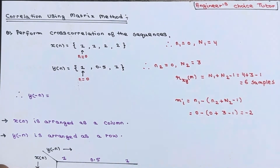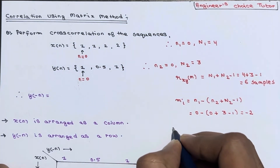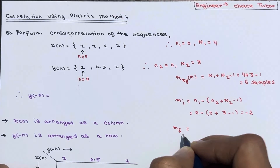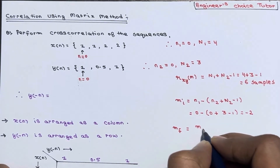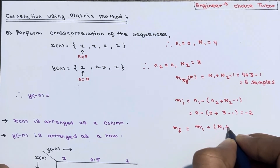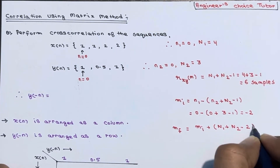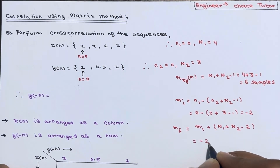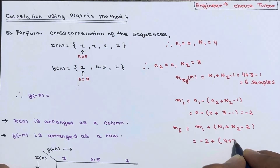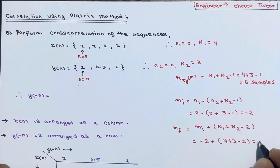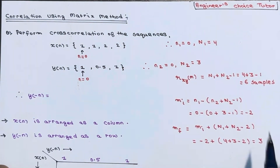The initial value of m is -2. The final value of m, m_f, is calculated as m_i + N1 + N2 - 2, which equals -2 + 4 + 3 - 2 = 3. So we know the initial value of m is -2, the final value is 3, and r_xy(m) will contain 6 samples.